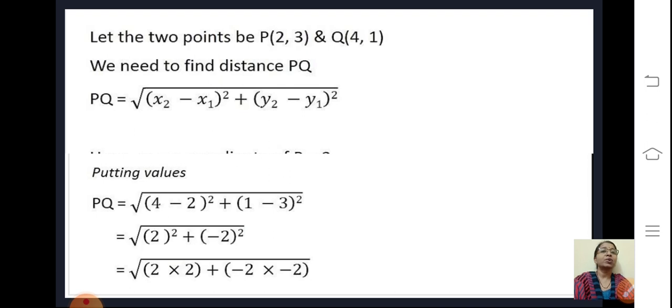Let me quickly revise what is this distance formula and how you use it. Suppose any two points say P and Q are given in a plane whose coordinates are 2,3 - coordinates of point P are 2,3, consider it as x1, y1 - and the coordinates of Q say 4,1,